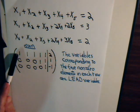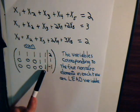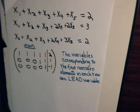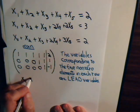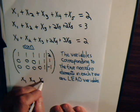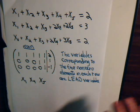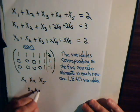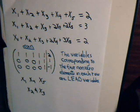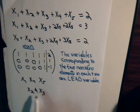So over here, x1 would be a lead variable. For this row, it would be x4. For this row, it would be x5. So x1, x4, and x5 are the lead variables. The variables that are left over — in this case, x2 and x3 — are the free variables. They're called free because these can assume any value whatsoever.